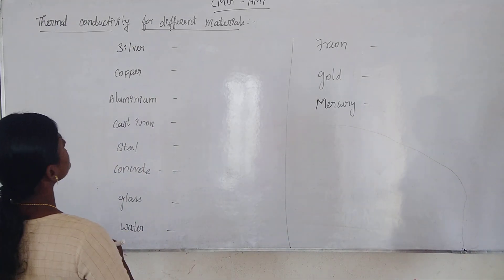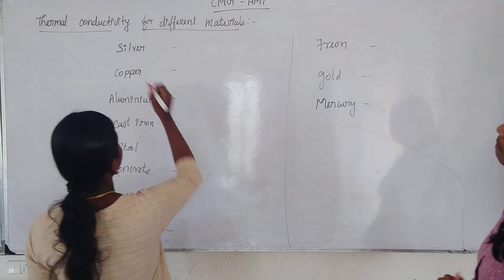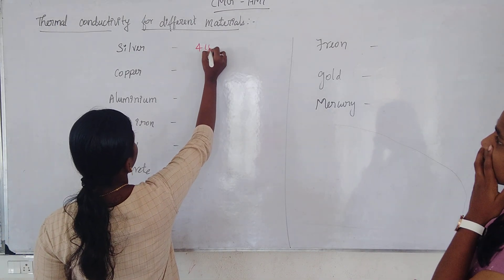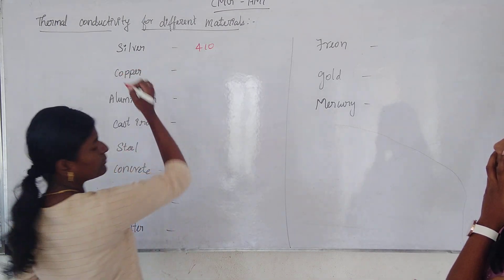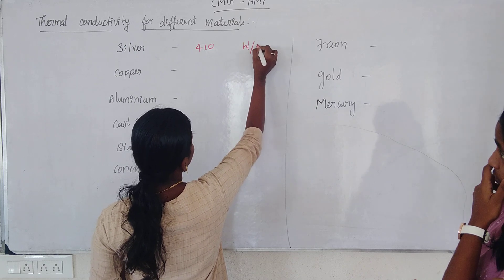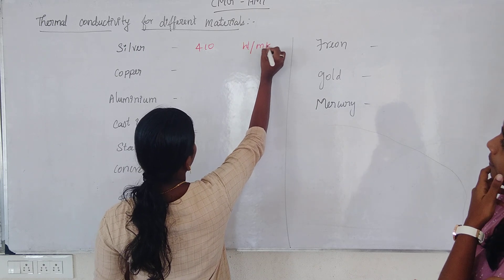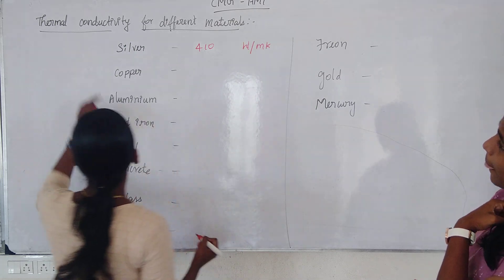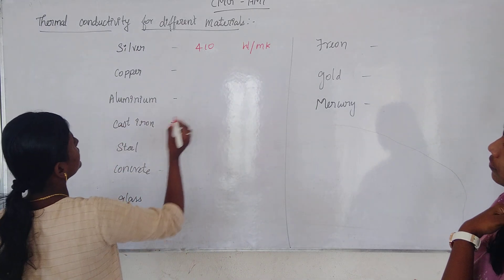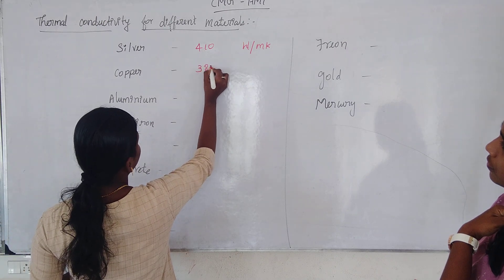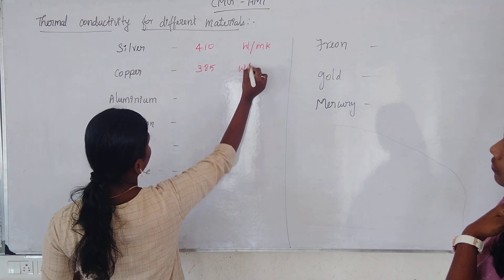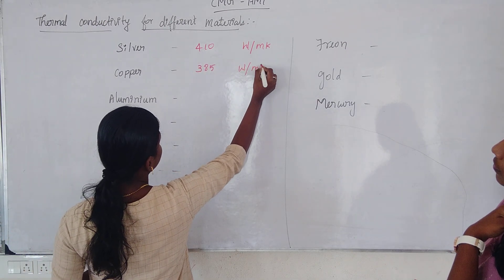The first material is silver. Silver has a thermal conductivity of 410 watt per meter Kelvin. The next material is copper. Copper's thermal conductivity is 385 watt per meter Kelvin.